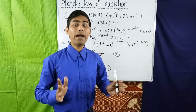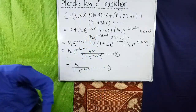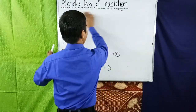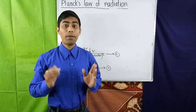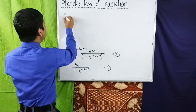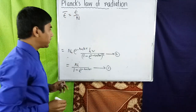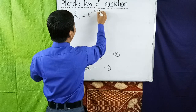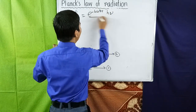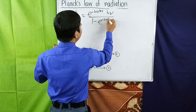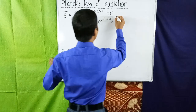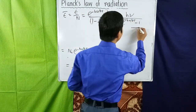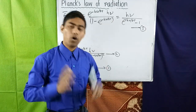Dividing equation 2 by equation 1, we get the average energy of the oscillator. The average energy ε̄ = ε/N = e^(−hν/kT)·h·ν / (1 − e^(−hν/kT)) = h·ν / (e^(hν/kT) − 1). This is equation 3, giving the average energy of a single oscillator.